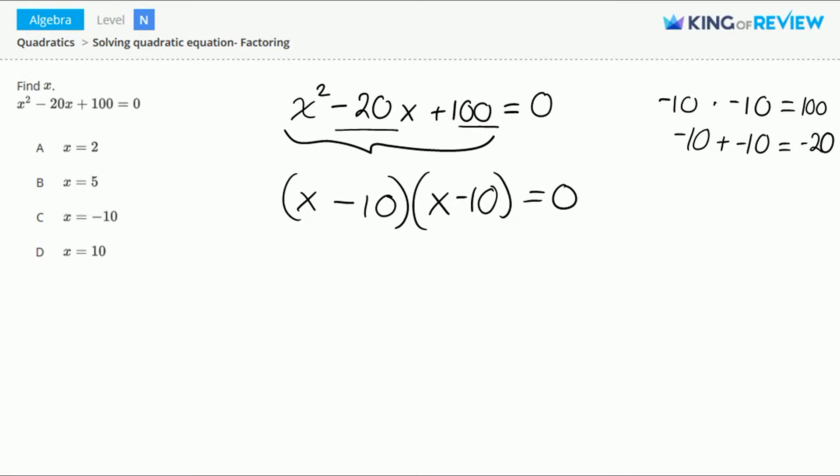The zero product property tells us that if we have a number, let's call it a, and we multiply it by 0, we will get 0 for the answer. So if we set any one of these two terms equal to 0, we'll end up with 0 for our answer.